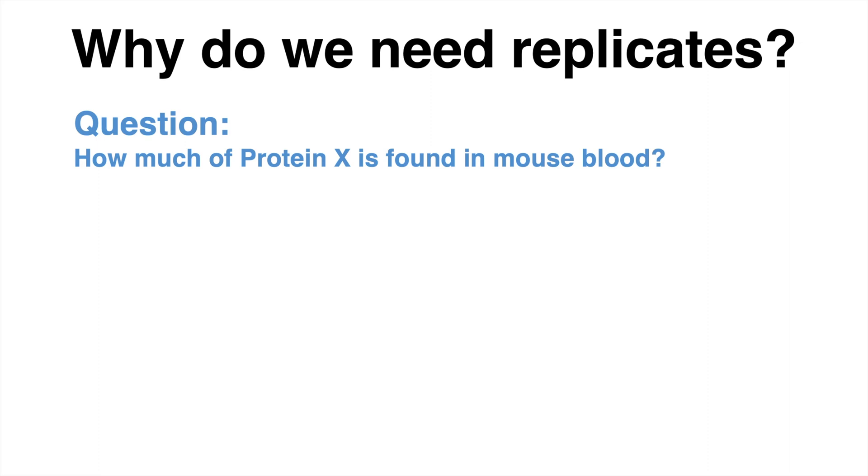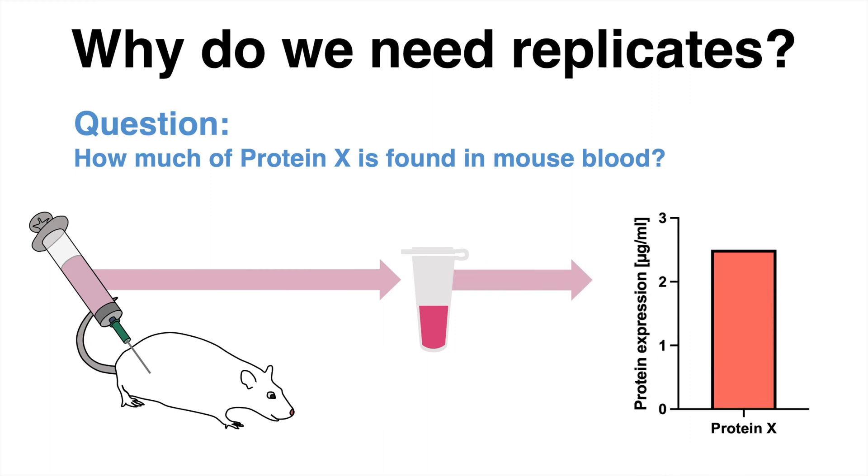If the scientist has one mouse and extracts blood from that individual, the sample is processed and the research question can be answered. 2.5 microgram per milliliter of protein X is found in blood of this mouse.